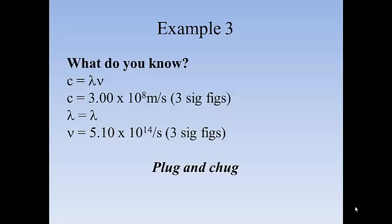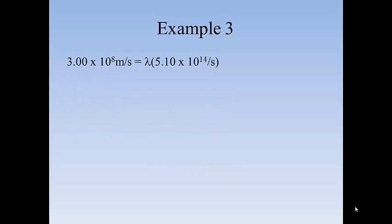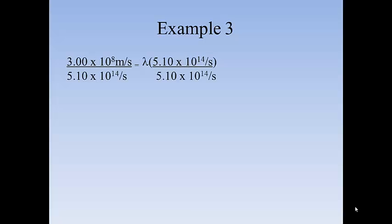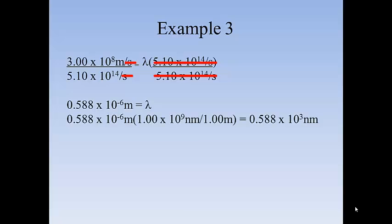So now we just need to plug and chug. Once again, set the equation up in the normal manner. Divide both sides by 5.1 times 10 to the 14th per second. You get this number for the number of meters, but we want the answer in nanometers. Remember that there are 1 times 10 to the 9th nanometers for each meter.